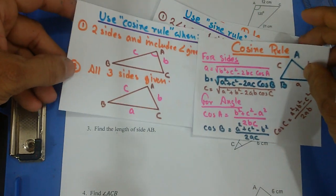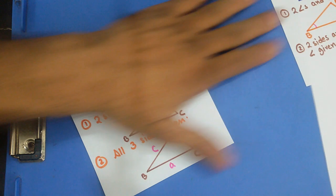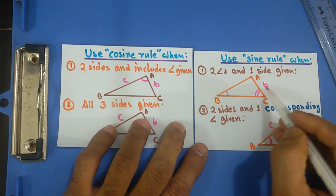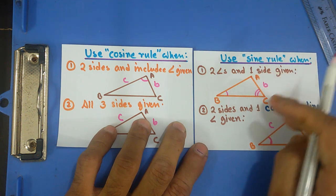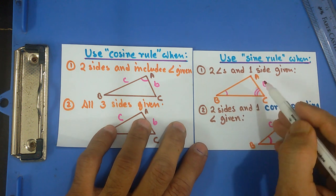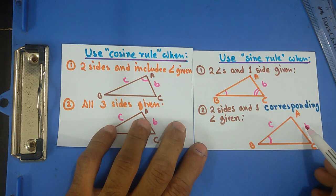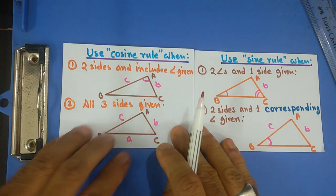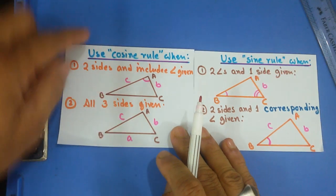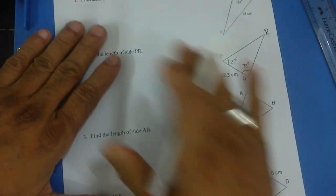Let me compare these two rules. The sine rule is used when any two angles and one side are given — it doesn't have to be the corresponding side, because you can always subtract the two known angles from 180 to get the third. Or when any two sides and the angle opposite one of those given sides is given. The cosine rule is used when all three sides are given, or when two sides and the included angle are given. I'll keep reminding you of this as we work through the problems.